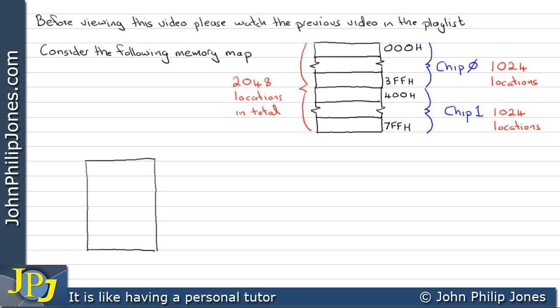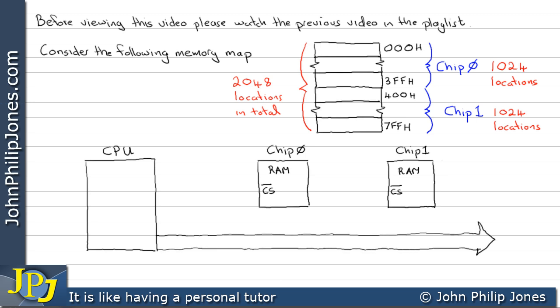I will now draw out the schematic diagram for a microprocessor system that has two chips as outlined by the memory map. Here we can see that both chips have a chip select, and here I'm drawing the address bus, which is going to have to have 11 lines, and I'm going to be taking 10 of those lines to each of the chips, and we can see I'm labelling the lines appropriately.